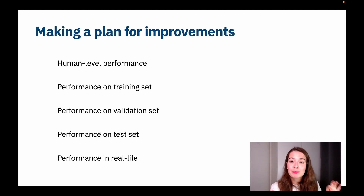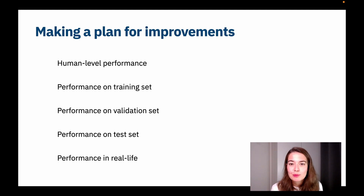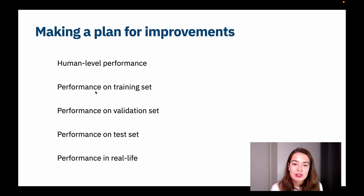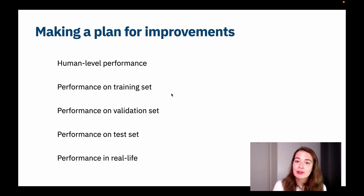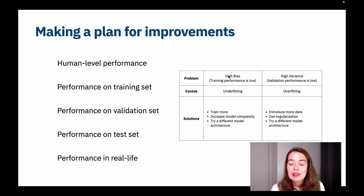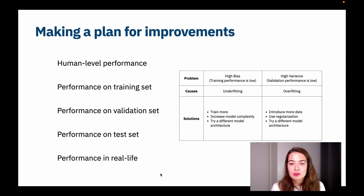Now we've figured out how to approach the diagnosis step to see what kind of changes we need to make in our model. Let's look at what specific improvements we can actually make. Between human level performance and training performance, we have the bias difference, and between training and validation, we have the variance difference. We talked about this during the lesson about overfitting, where we looked at a table laying out solutions to lower high bias or high variance. We also have some other solutions for the other steps, so let's look at them one by one.